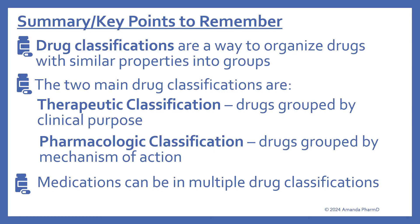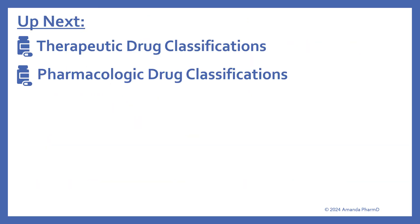So to summarize, drug classifications are a way to organize drugs with similar properties into groups. The two main drug classifications are therapeutic classification, which is drugs grouped by clinical purpose, and pharmacologic classification, which is when drugs are grouped by mechanism of action. It's also good to know that medications can be in multiple drug classifications. Up next, I'll be doing a video about the different therapeutic drug classifications, followed by a video about the pharmacologic drug classifications.